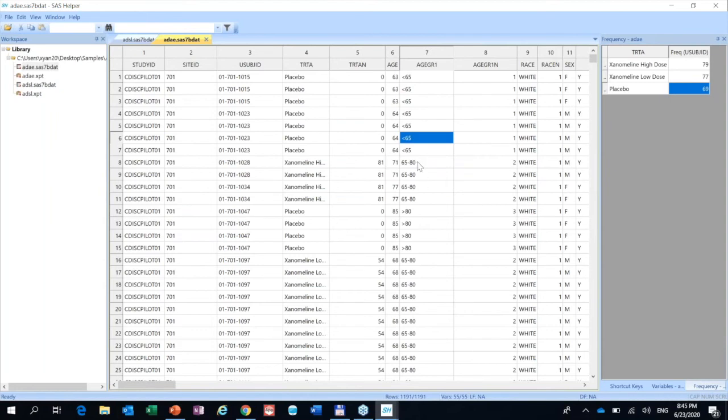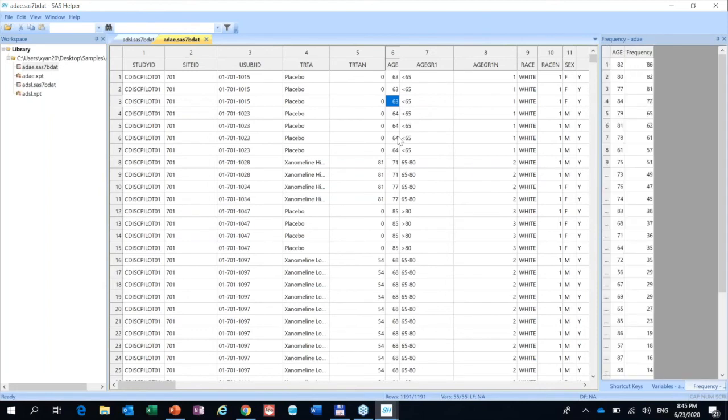The shortcut key for this one is just one letter, F. So here, you just click anywhere of one variable, press F, you will get the frequency. For this one, it's also supporting multiple variables. And also, you can sort here, and you can sort here. This is for the frequency.